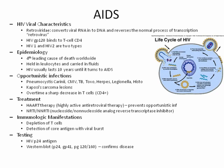AIDS patients develop Kaposi's sarcoma lesions — brown cancerous-type lesions. Over time there's a sharp decrease in T helper cells (CD4s), and T suppressors become elevated, further suppressing the immune system. Treatment is highly active antiretroviral therapy (HAART) — an expensive cocktail of pills that acts as a transcriptase inhibitor, slowing conversion from HIV to AIDS and potentially adding about 10 years to lifespan. For testing we look for the HIV p24 antigen, and a Western blot test confirms the disease.